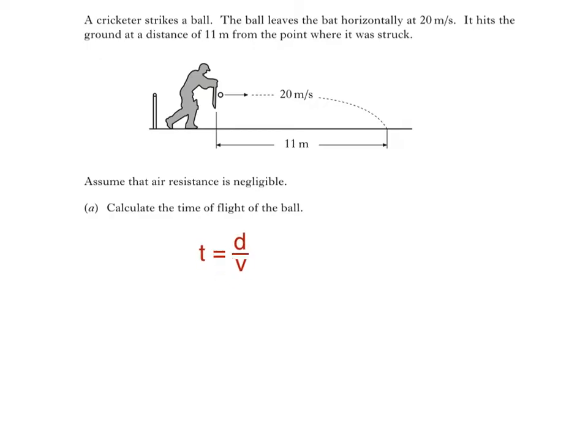Time t is the horizontal distance of 11 metres divided by the ball's horizontal speed of 20 metres per second. This gives us a time of 0.55 seconds.